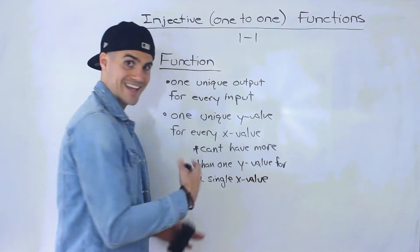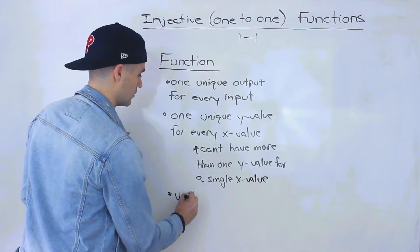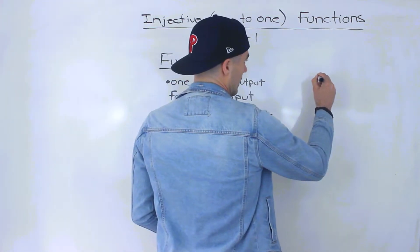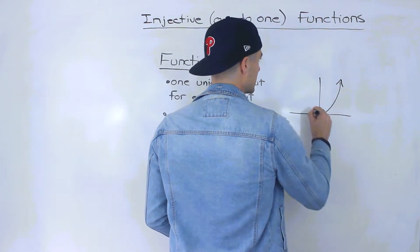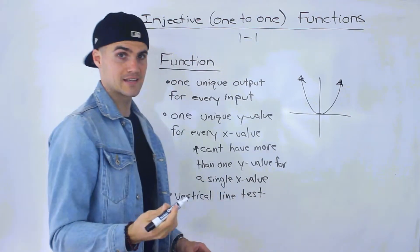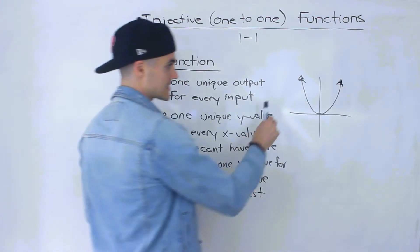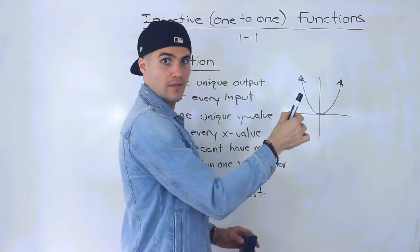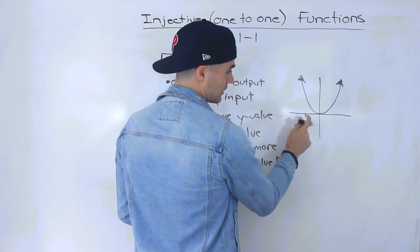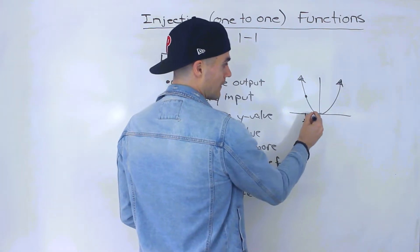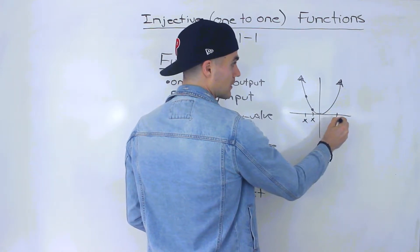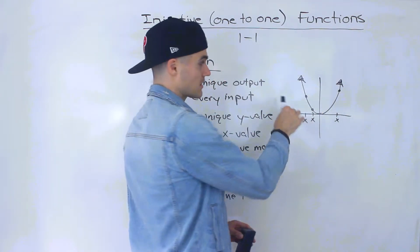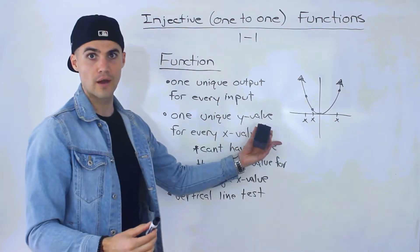To test for this we use the vertical line test. For example, a parabola is a function because it passes the vertical line test — when we run a vertical line through it, there are no two points on the function that touch for a single x-value. Each x-value has only one single y-value, so it passes the vertical line test and we know it's a function.